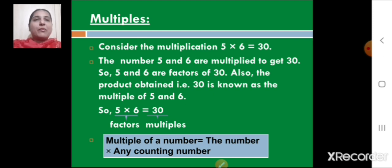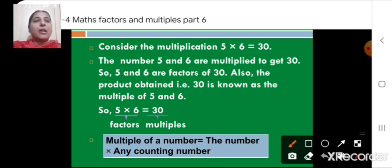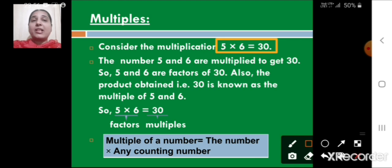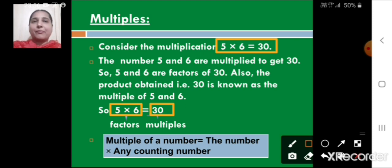Let us see one example first. Consider the multiplication 5 multiplied by 6, which gives us 30. Here, 5 and 6 are multiplied to get 30, so 5 and 6 are factors of 30. The product obtained, that is 30, is known as the multiple of 5 and 6.